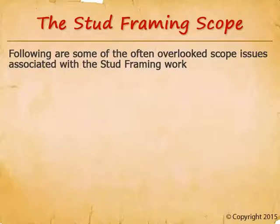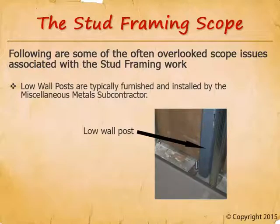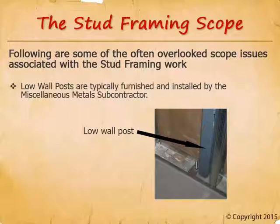Our first examples focus on often-overlooked scope issues associated with stud framing. Low wall posts are typically furnished and installed by the miscellaneous metal subcontractor and are a very common scope gap. They're used for freestanding walls that have no top support — low-height walls such as a 42-inch guardrail commonly need them. Both miscellaneous metals and interior stud framing are design-build trades, so low wall posts may not be shown on the drawings. General contractors often lose this contentious change order debate.